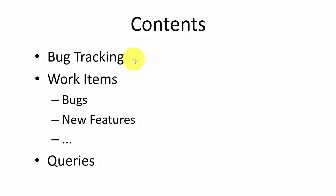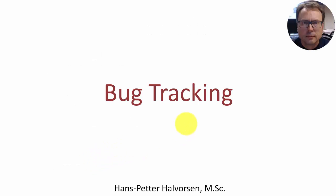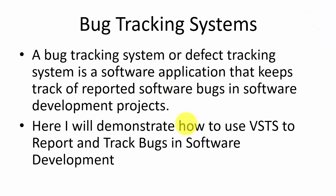In this video we will show how to use Visual Studio Team Services as a bug tracking system. A bug tracking system, or a defect tracking system, is a software application that keeps track of reported software bugs in all kinds of software development projects. Here I will demonstrate how to use Visual Studio Team Services to report and track bugs in software development projects.